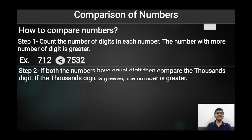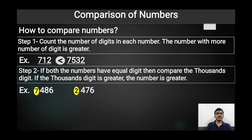If both numbers have the same number of digits, we compare the thousands place. For example, in the first number the place value of thousands is 7000, and in the second number the place value of thousands is 2000. Since 7000 is greater than 2000, we can write that 7486 is greater than 2476.